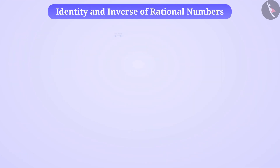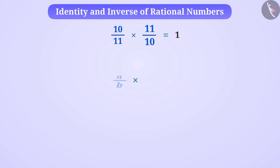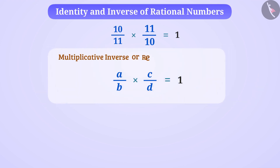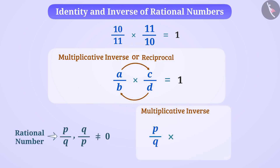Now consider the rational number 10/11. Can you tell me a rational number which when multiplied with 10/11 gives the answer 1? Such a number is 11/10. If the multiplication of a rational number a/b with another rational number c/d is 1, then a/b and c/d are multiplicative inverse or reciprocal of each other. The multiplicative inverse of a non-zero rational number is obtained by interchanging its numerator and denominator.